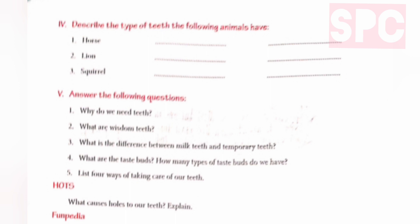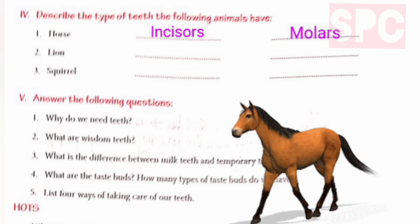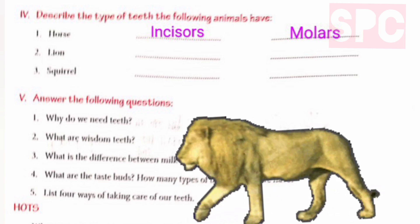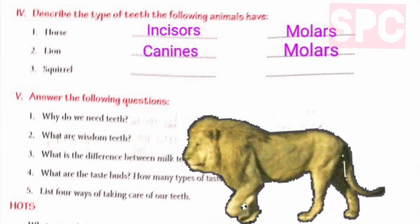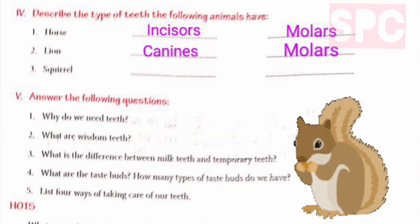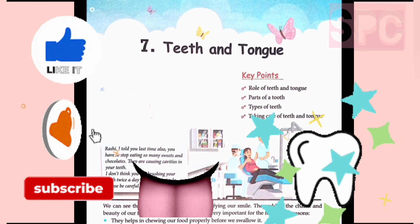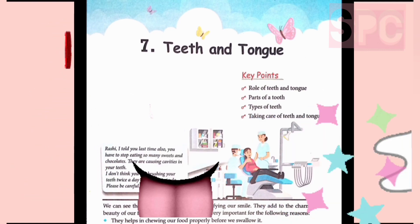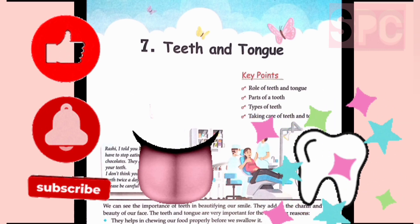Question 4: Describe the type of teeth the following animals have. (1) Horse — Since horse is a herbivore, it has well-developed incisors for biting grass and molars for grinding and chewing it. (2) Lion — Lion is a carnivorous animal; it has sharp canines to tear flesh and molars for chewing before swallowing. (3) Squirrel — Squirrel feeds on small fruits and nuts; it has well-developed incisors and molars for biting and grinding its food. Today we learned about teeth and tongue — stay happy and keep learning!